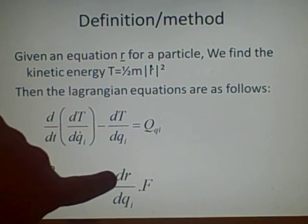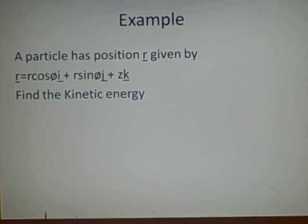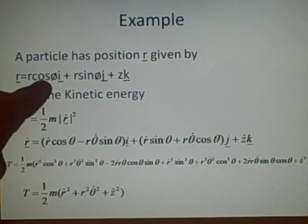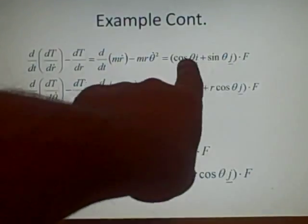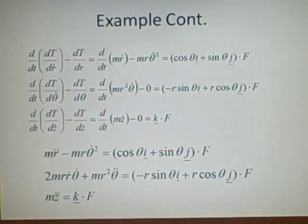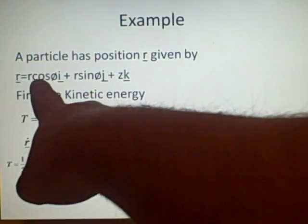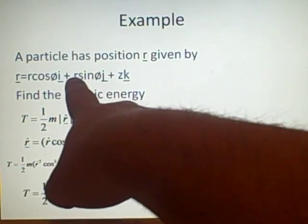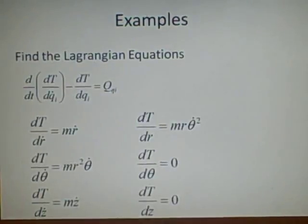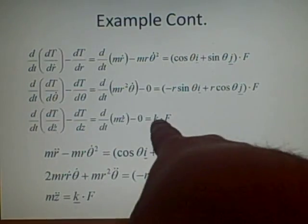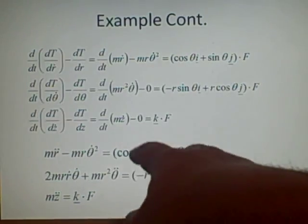To find Q-i, we differentiate the particle position equation with respect to each variable and dot with external force f. With respect to r: cosine theta i plus sine theta j, dotted with f. With respect to theta: minus r sine theta i plus r cosine theta j, dotted with f. With respect to z: just k, so k dot f.